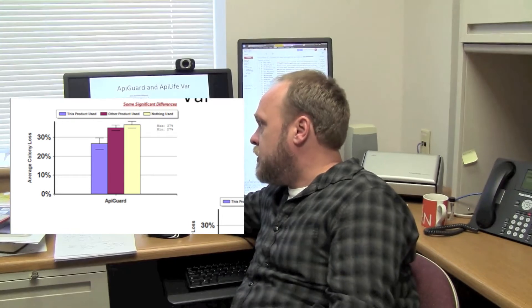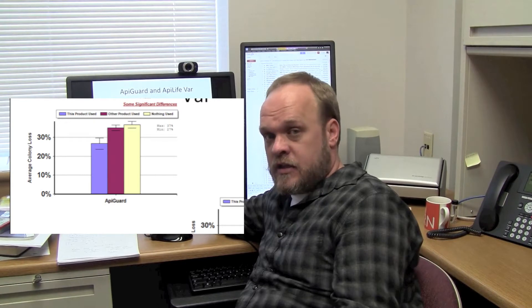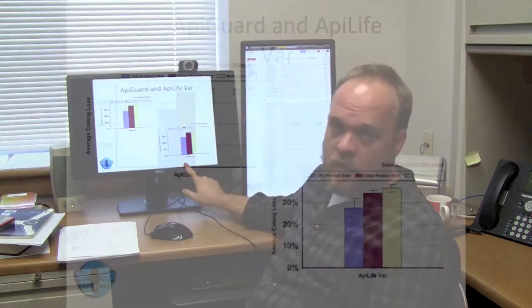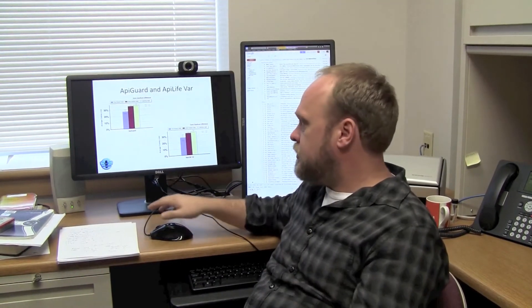People who used Apigard, which is basically a gel that contains the essential oil, lost fewer colonies than those who used another known varroa mite control product or nothing at all. The same was true for Apilife Var, which is basically a wafer that has essential oils impregnated in it.